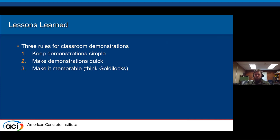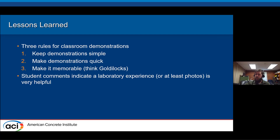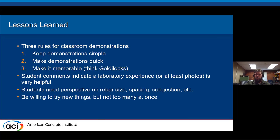To finish up, here are some lessons learned from years of teaching this course. If you're doing classroom demonstrations, keep them simple, make them quick, and make them memorable — students are going to remember Baldilocks. Student comments confirm that laboratory experiment experiences are very helpful. Students really need perspective on rebar size, spacing, and congestion. Be willing to try new things but don't overload yourself at the beginning. And always ask for feedback from students, because they are willing to provide help on what works for them.